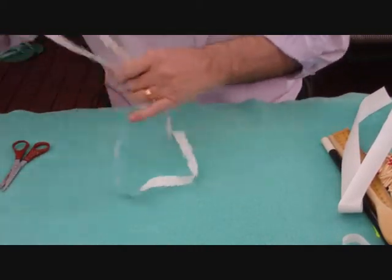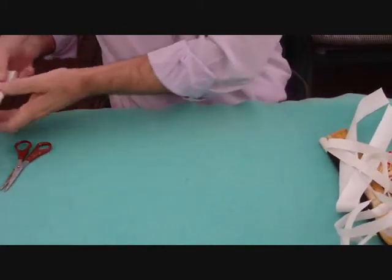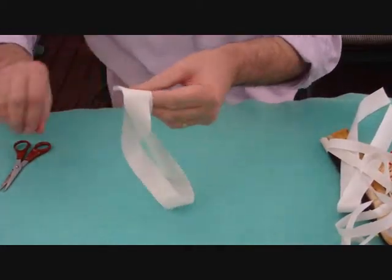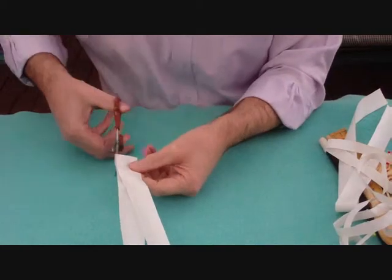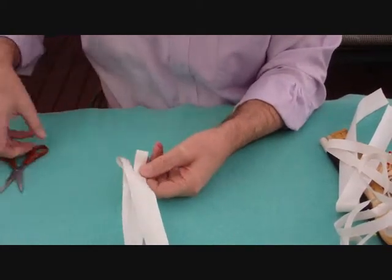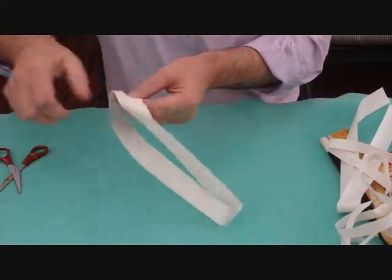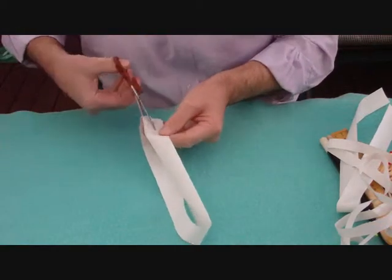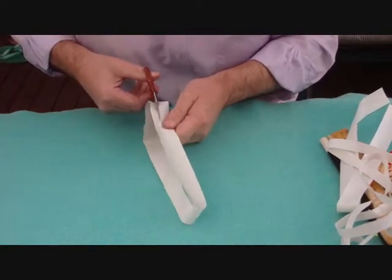Which leads us to ask the question, what's going to happen with the third one? Now this is the one that's been twisted twice before gluing. Another little snip and we'll follow that around right around the center of the band.